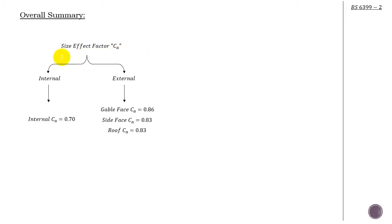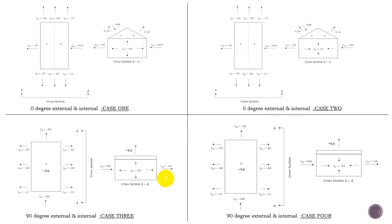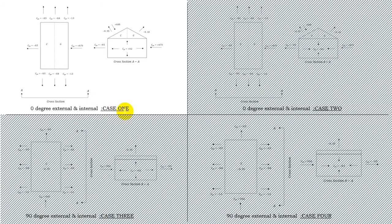To summarize, we now have the size effect factor Ca for both the interior and exterior. With this, we can determine the net surface pressure. We have four cases to work through. To keep the video from being too lengthy, I'll demonstrate Case 1 in detail - Cases 2, 3, and 4 follow exactly the same procedure.